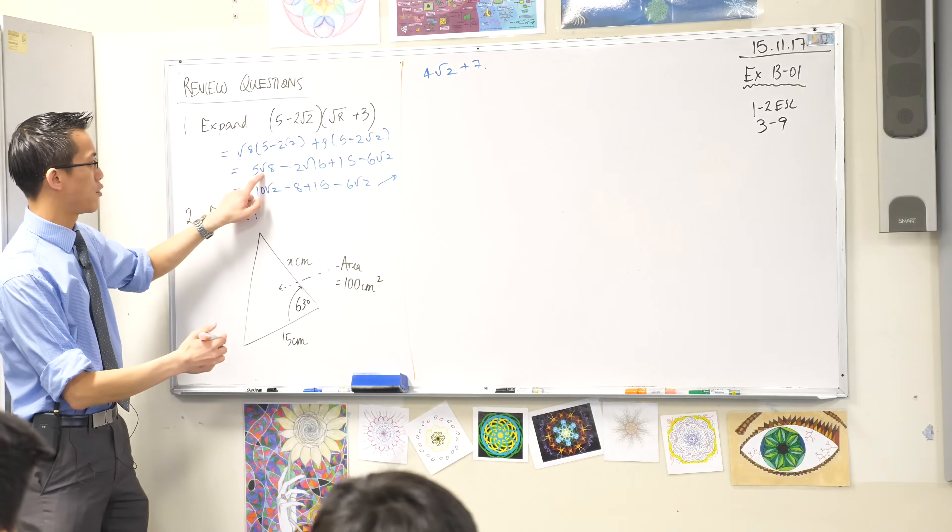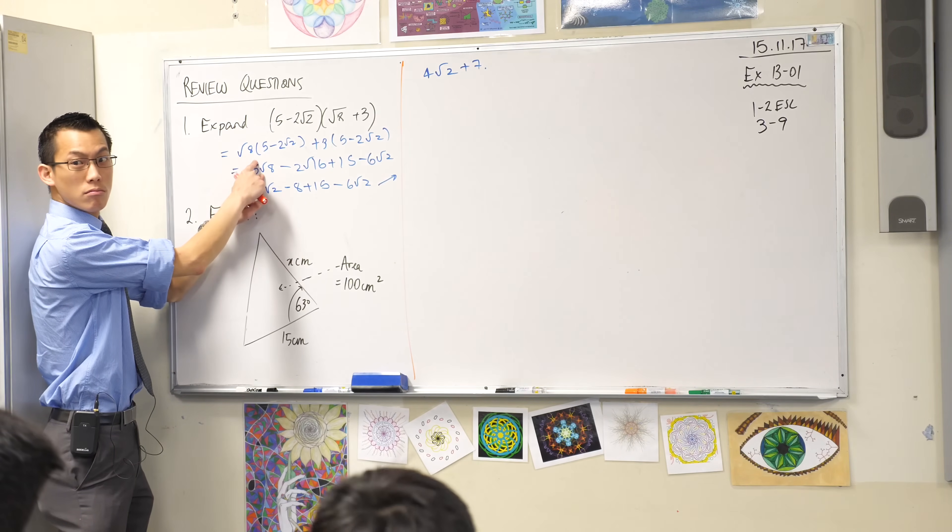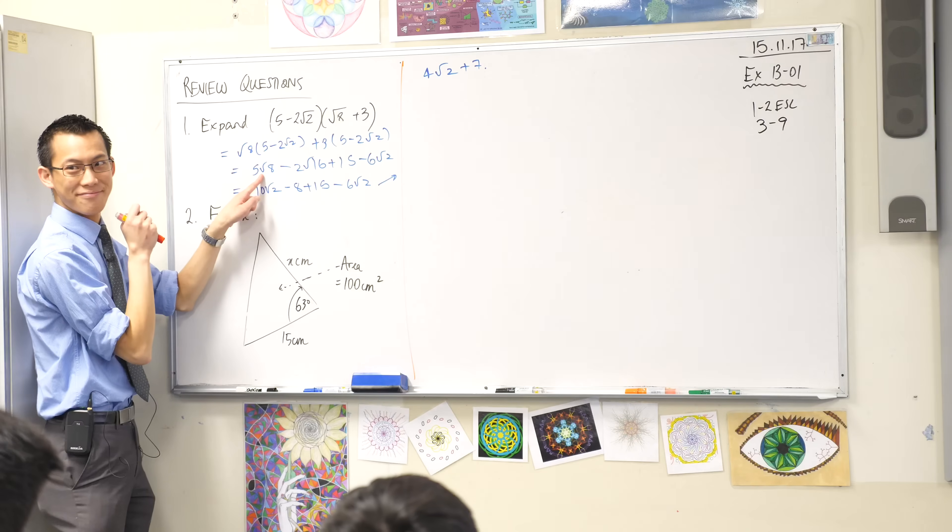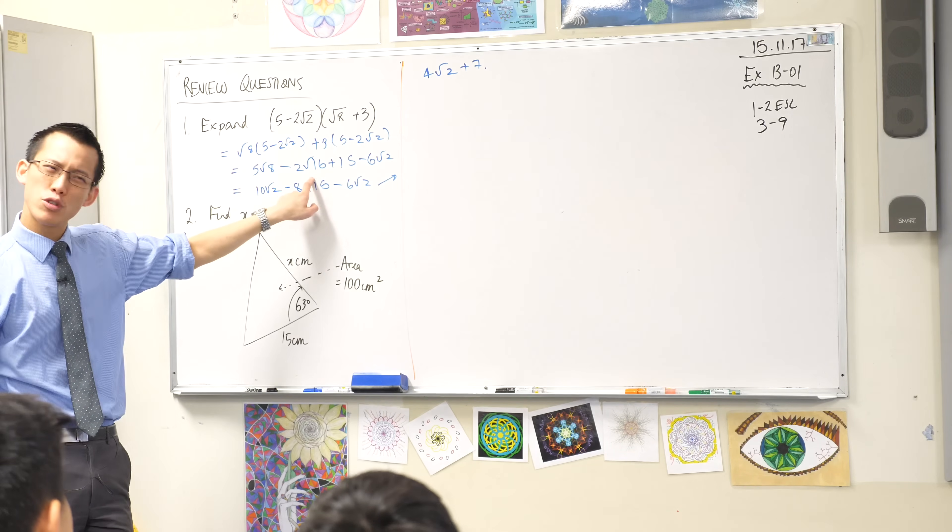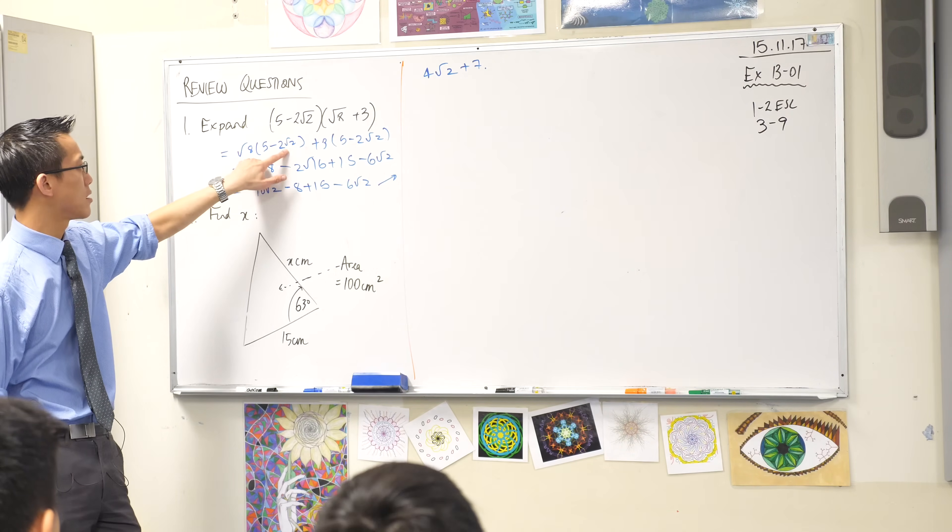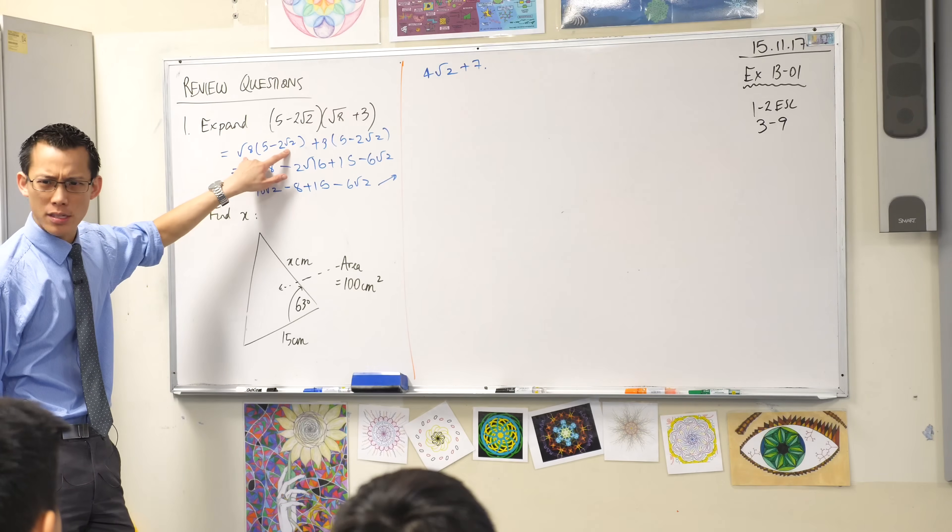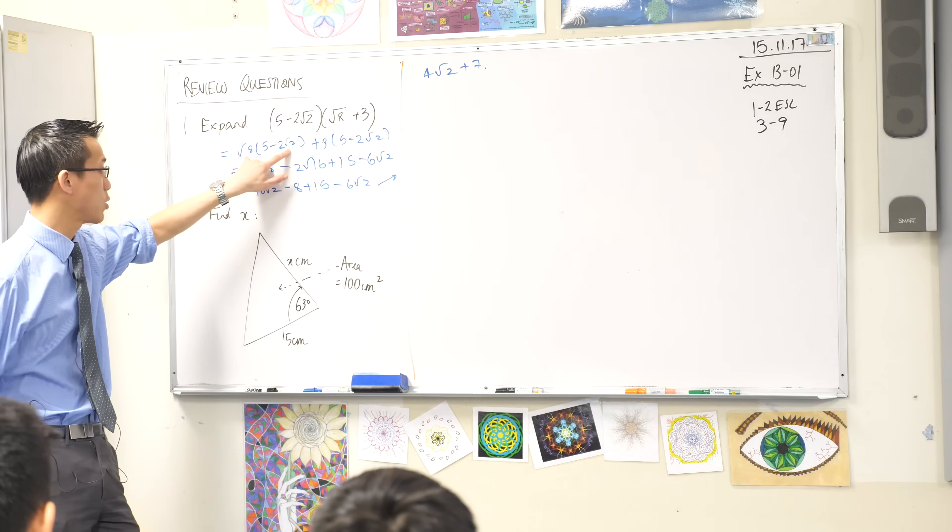So we can see here 5 root 8, does that look good? Not a rhetorical question, 5 root 8, it does look good, right? Okay good. 2 root 16, that's come from these two, is that what happens to square roots when you multiply them? Looks good.